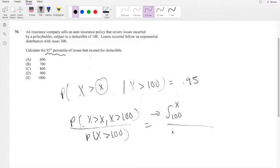And we also know that X is an exponential distribution with a mean of 300. So plugging that in, this is equal to 1 over 300 e to the negative x over 300.